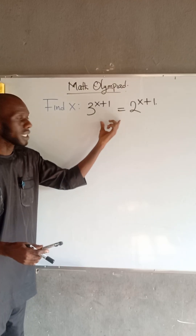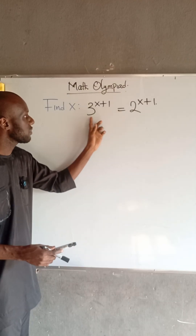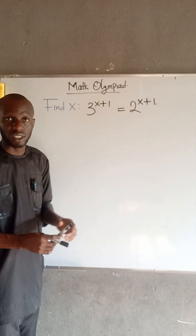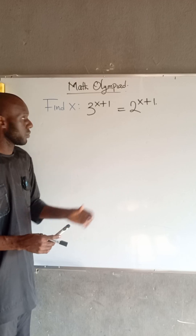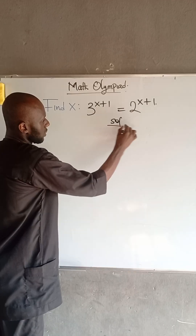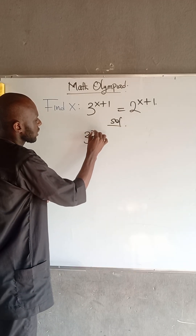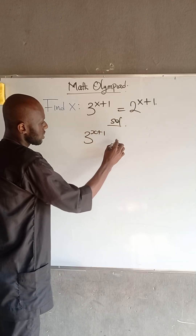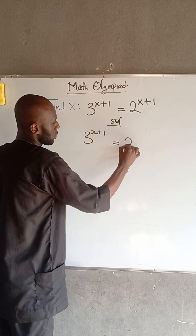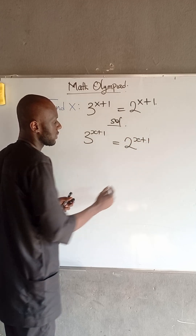Now, if you look at this exponential equation, we have the same base for the same exponent, and we are asked to find x. We have that 3 raised to the power of x plus 1 is equal to 2 raised to the power of x plus 1.